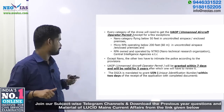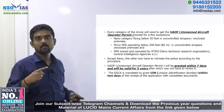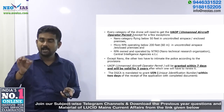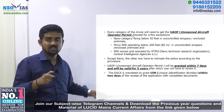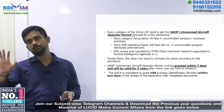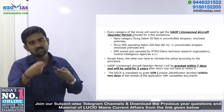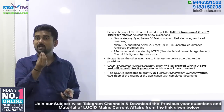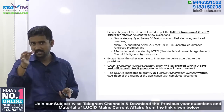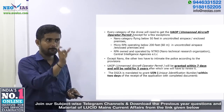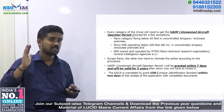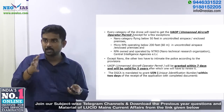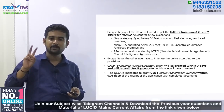The UAOP, once applied for, must be granted within a period of seven days and will be valid for five years. Additionally, the DGCA is ensuring that every drone should have a UIN — Unique Identification Number — for proper tracking of where drones are flying in the nation. This UIN must be issued within two days of receipt of the application with complete documents.